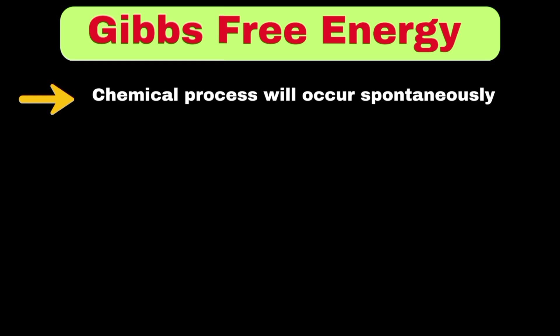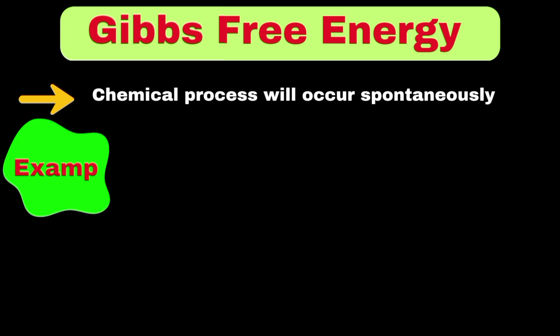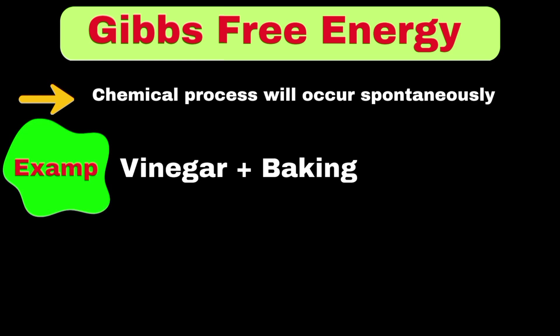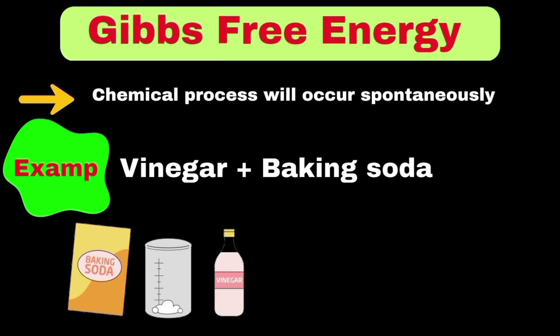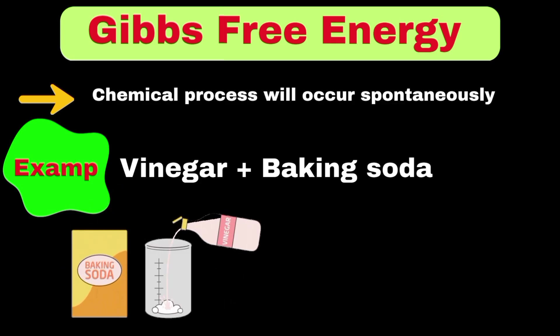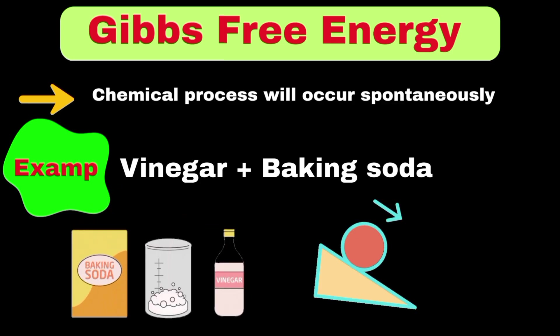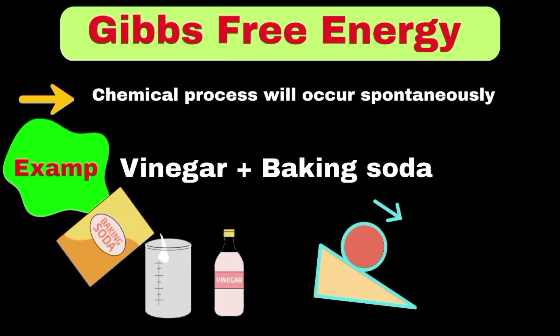Moving to Gibbs free energy, this concept helps us predict whether a chemical reaction will occur spontaneously. When we mix vinegar and baking soda, the reaction happens spontaneously because the Gibbs free energy decreases. This decrease in Gibbs free energy is like a ball rolling downhill — it happens naturally without any external push.